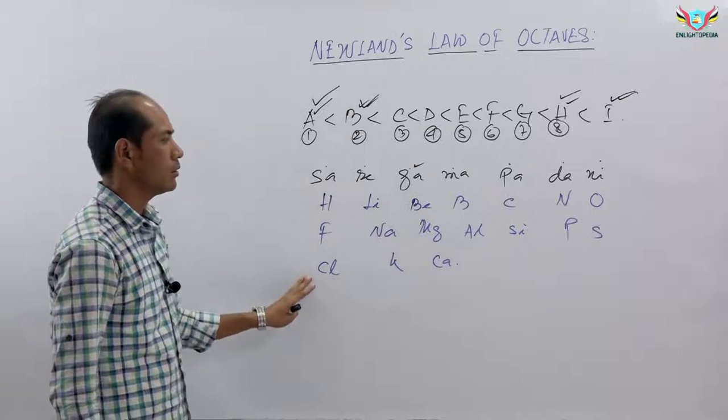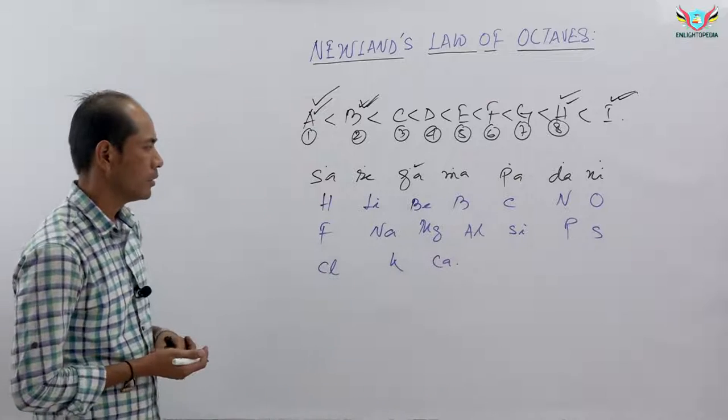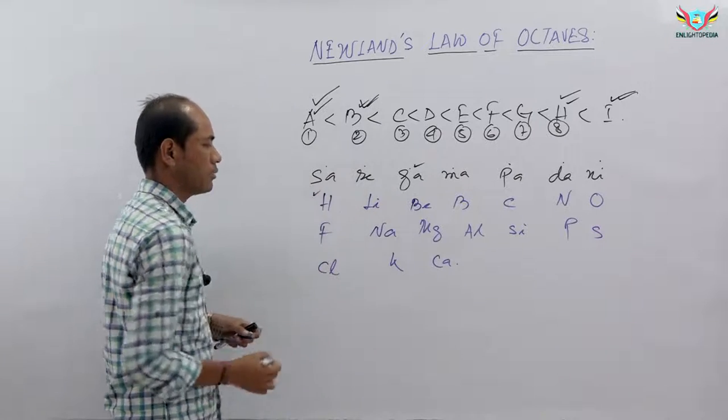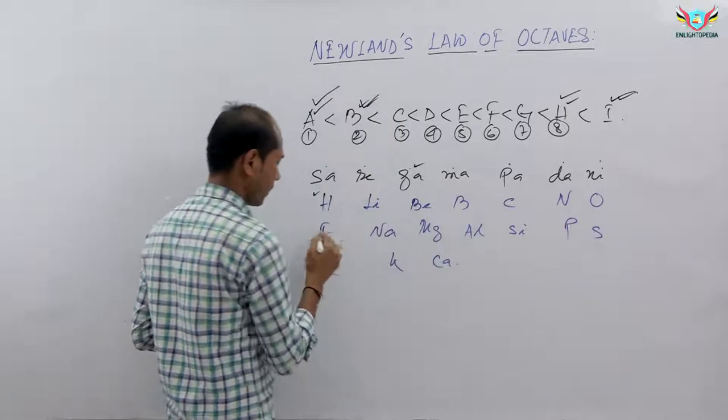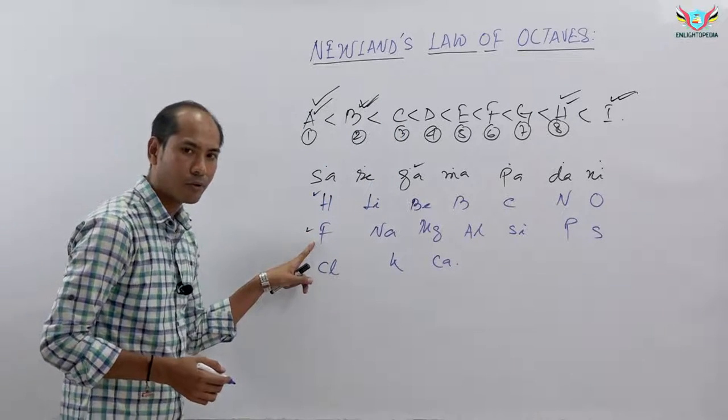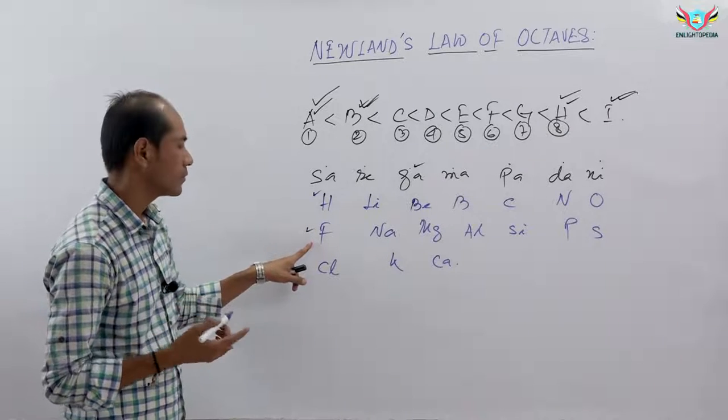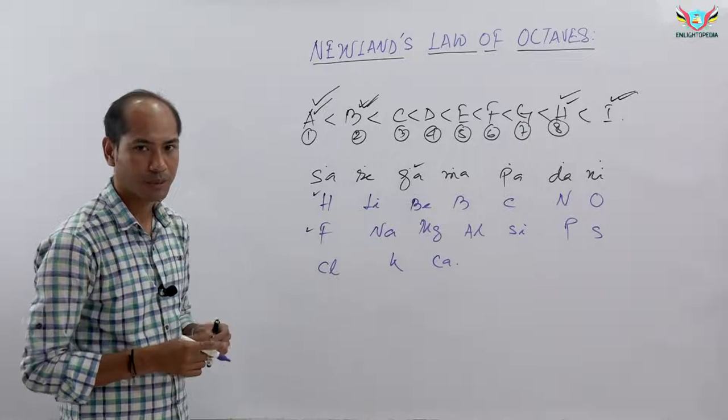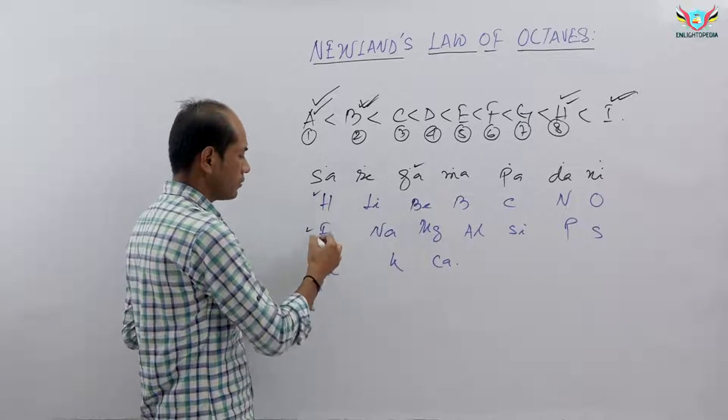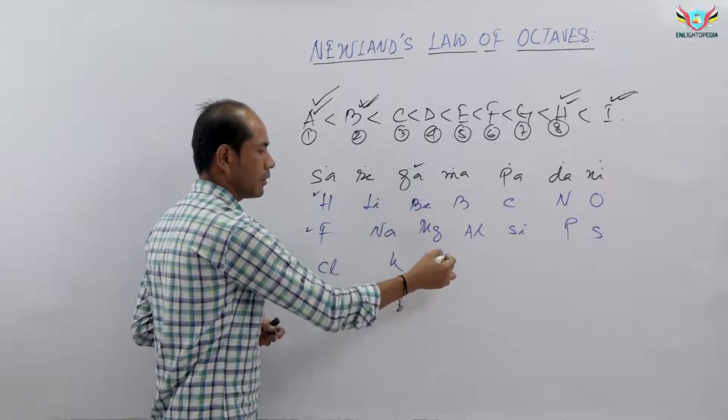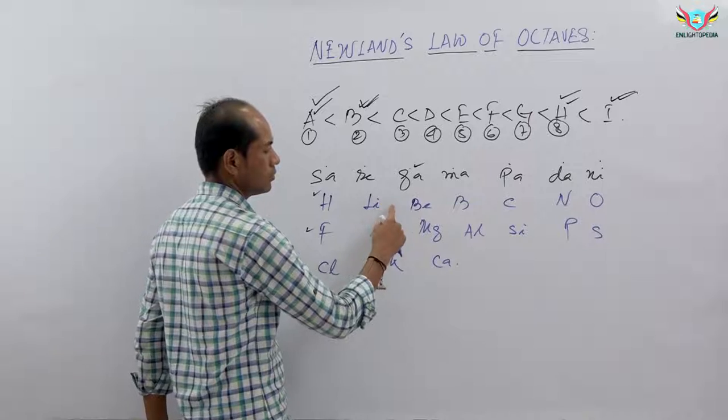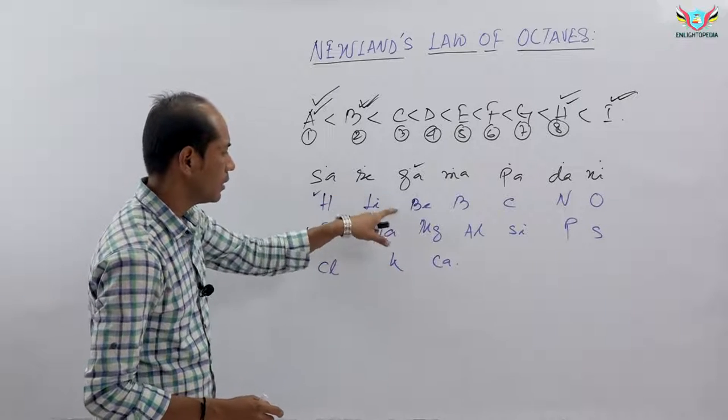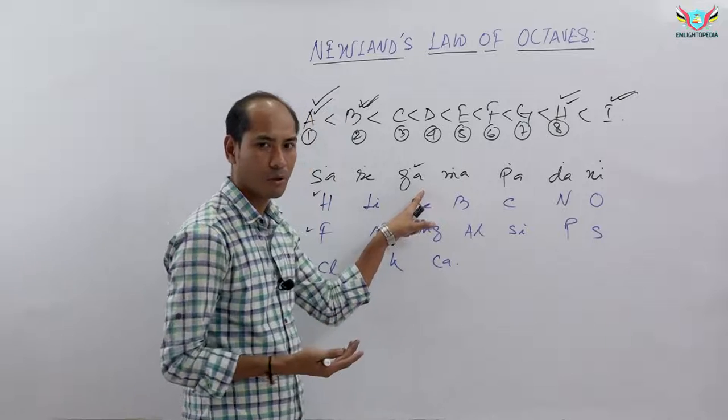When we arrange these elements following Newland's Law of Octaves, any element and the eighth element from it have similar properties. If we start from hydrogen - one, two, three, four, five, six, seven, eight - we reach fluorine. Hydrogen and fluorine should have similar properties. If we start from lithium - one, two, three, four, five, six, seven, eight - we reach sodium. Then from sodium we reach potassium. So in vertical columns, the elements have similar properties.